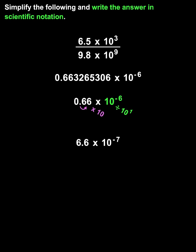So we have 6.6 times 10 to the negative 7th, which is our final answer, written in scientific notation.